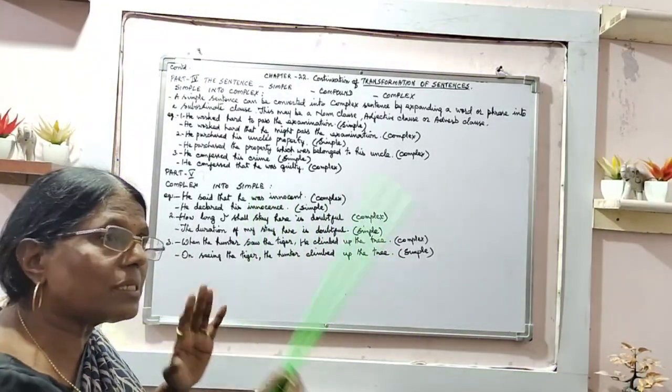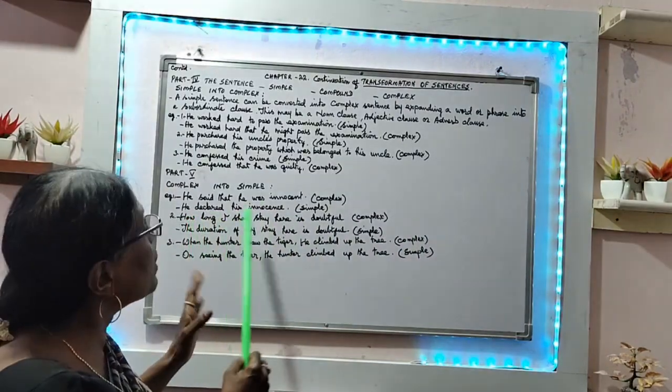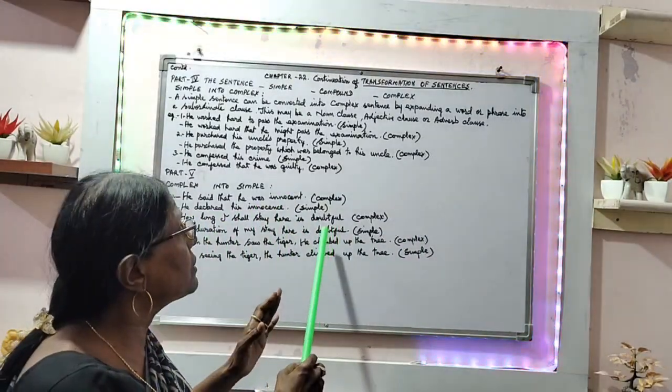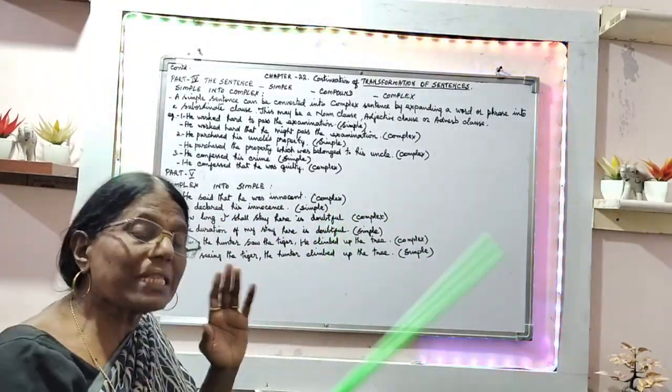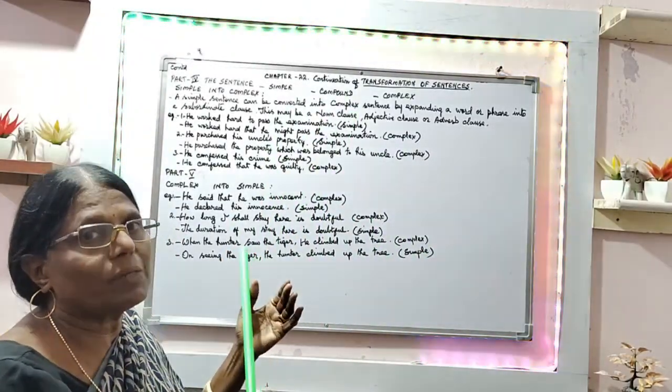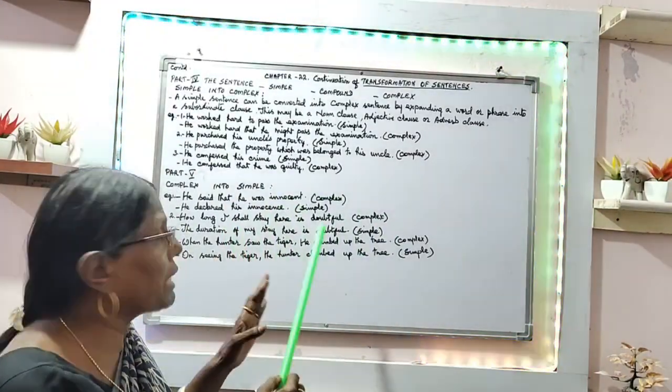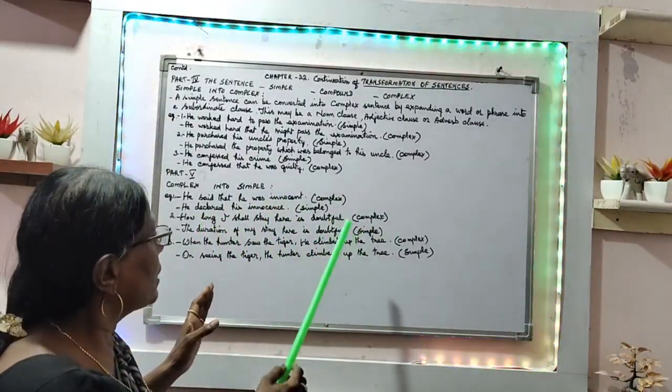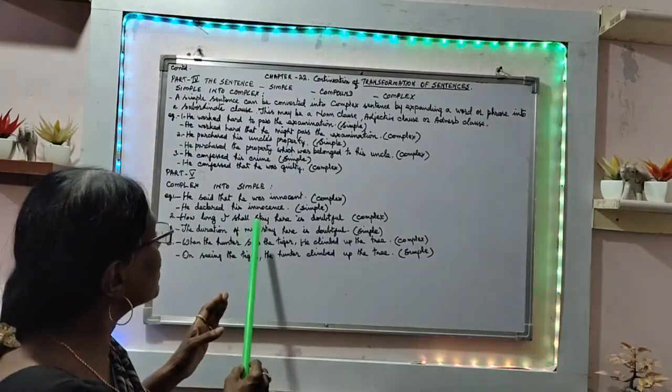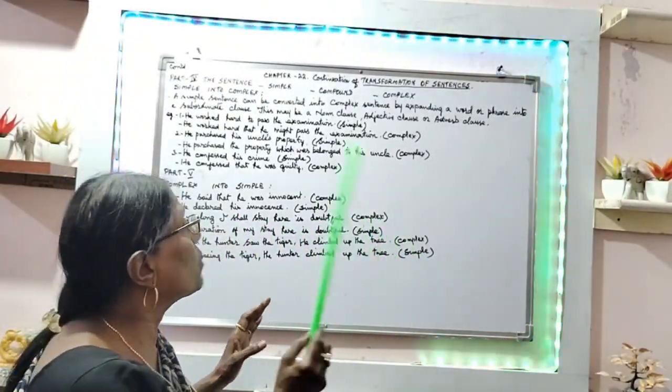Second example: 'How long I shall stay here is doubtful' is complex. Note: if it is a question, 'shall I' comes in front; otherwise, 'I shall' is written at the back. So again, 'How long I shall stay here is doubtful' is a complex sentence.